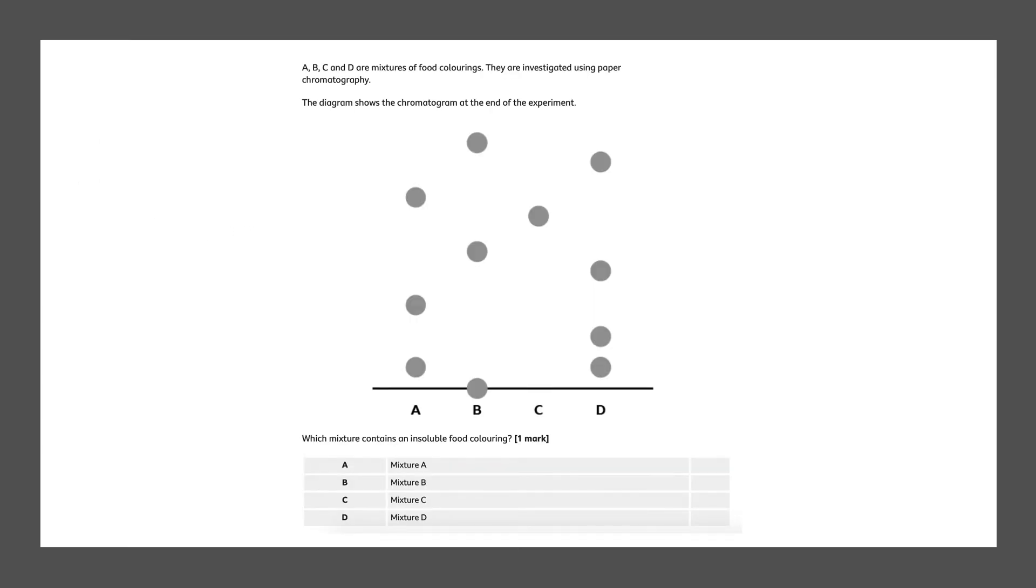Next question. A, B, C and D are mixtures of food colorings. They are investigated using paper chromatography. The diagram shows the chromatogram at the end of the experiment. So this is our chromatogram.